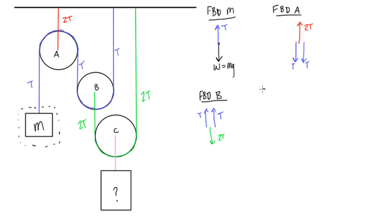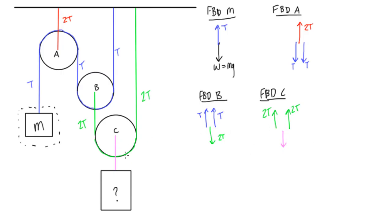Now let's do the free body diagram of pulley C. We will have two ropes pulling up on this point — 2T and 2T — and then we're going to have the tension in the purple cable pulling down. For this pulley to be in static equilibrium, the tension pulling down on this purple cable has to be 4T. Otherwise, this would move up or down.